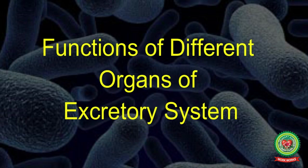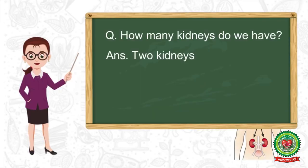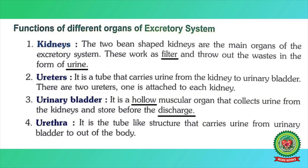Now come to the topic: function of different organs of the excretory system. The first organs are the kidneys — the bean-shaped kidneys, which are the main organs of the excretory system. We have two kidneys, and their shape is bean-shaped. Kidneys are the most important part of the excretory system.